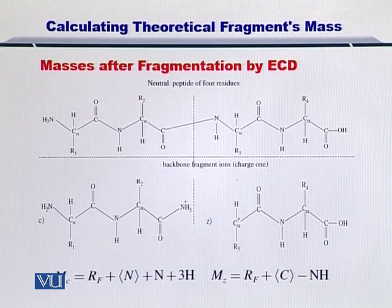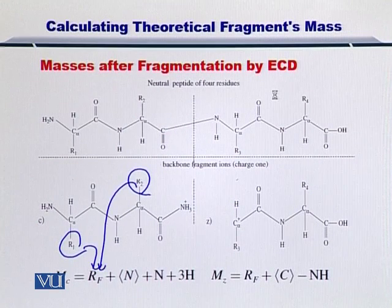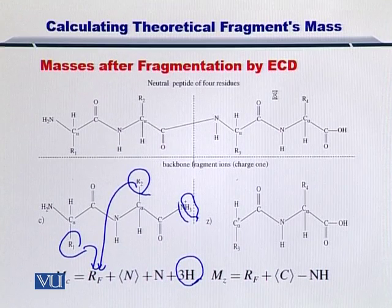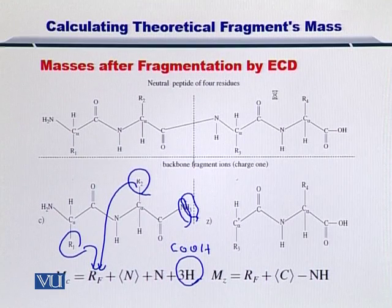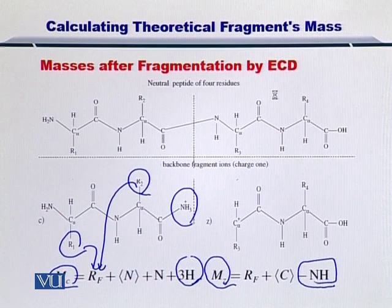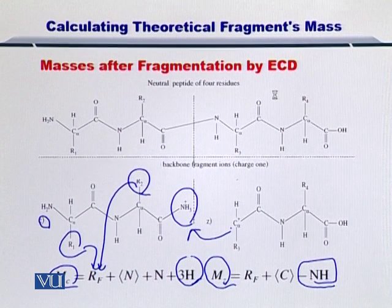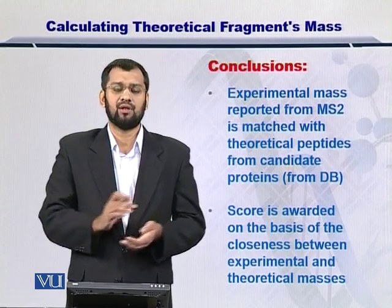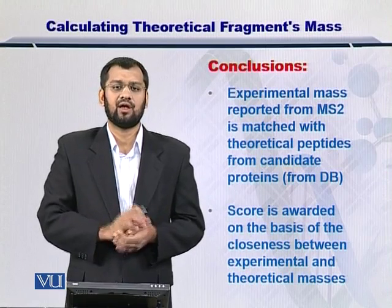Similarly, if you have another fragmentation technique such as ECD, you can do the same procedure — add up the molecular weight of the side chains. If you notice carefully, there are 3 hydrogens added along with the nitrogen. Because otherwise it would have been a COOH if it were an intact protein, but since it is a fragment, this group is added here, and you can arrive at the C ion's molecular weight. Similarly, for the Z ion you use minus NH, because it has been removed and donated to the C ion. Using these equations you can arrive at the molecular weight of all the proteins and their fragments.